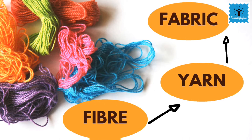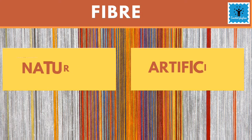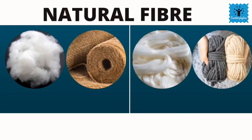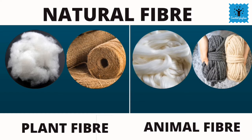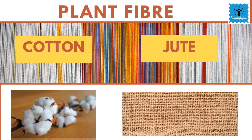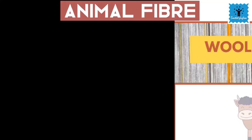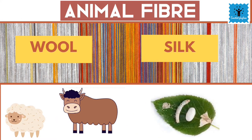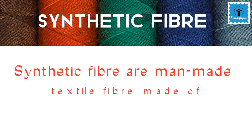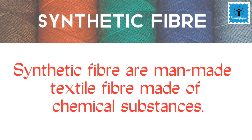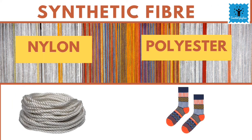Fabric is made from yarn and yarn is made of fibers. There are two types of fibers: natural fibers and artificial, also called synthetic fibers. Natural fibers are obtained from natural sources like plants and animals — cotton and jute are obtained from plants, while wool and silk are obtained from animals. Synthetic fibers are man-made fibers made from chemical substances; nylon, rayon, and polyester are a few examples.